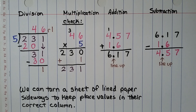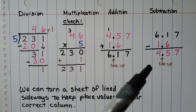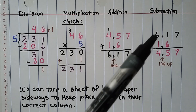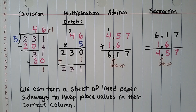We can turn a sheet of lined paper sideways to keep our place values in the correct column. That way, when we're subtracting decimals, we keep our place values straight and don't make a mistake.